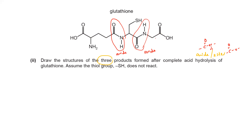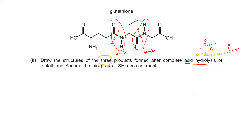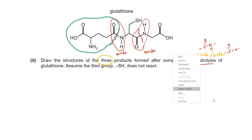So we have two amide functional groups which can undergo acid hydrolysis, and they will be broken. The C-N bond will be broken during the hydrolysis, giving three different products. I'll circle every part with a different color, then draw the structure of each product using that color so you can see clearly what's happening.